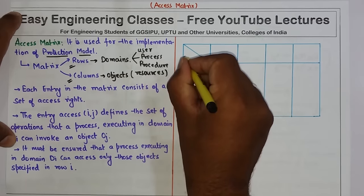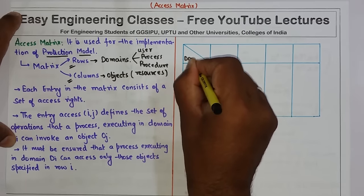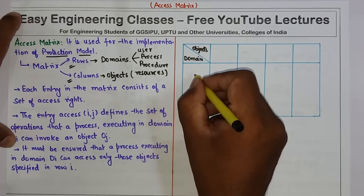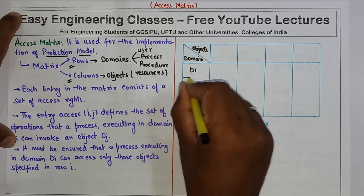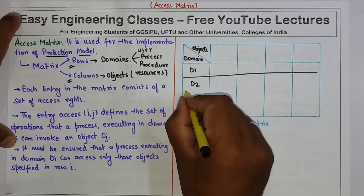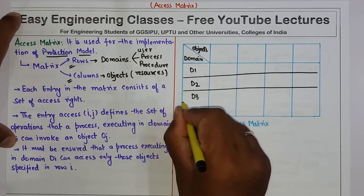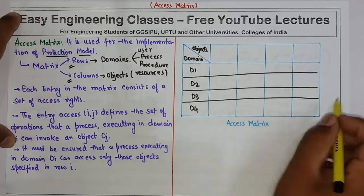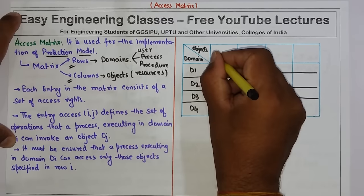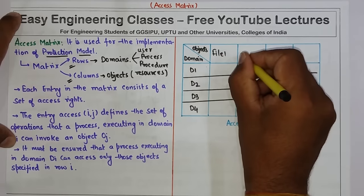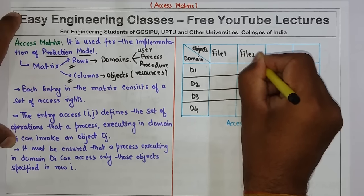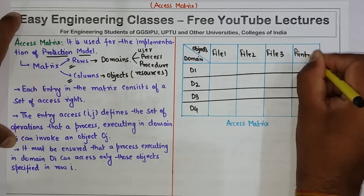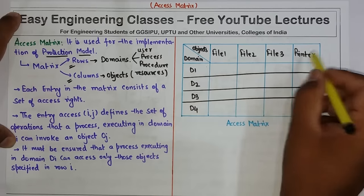Now if we fill this matrix, we are going to represent domains and objects. Suppose we have four domains: d1, d2, d3, and d4 — these are specified in the rows. And the objects are: file1, file2, file3, and one object can be a printer. So these are the domains and these are the objects.